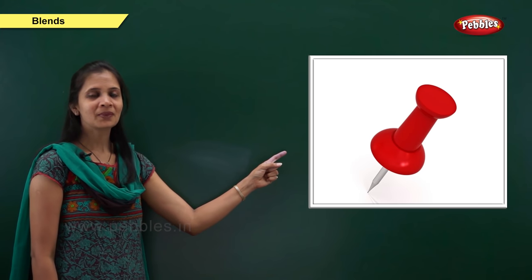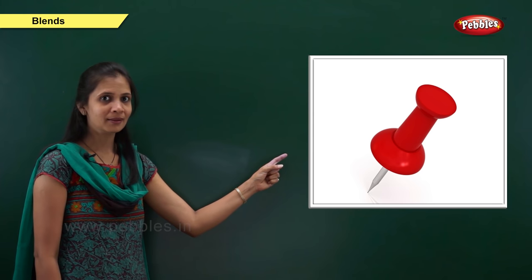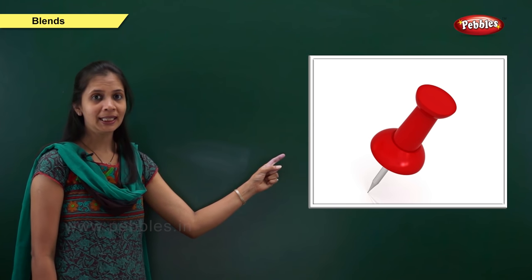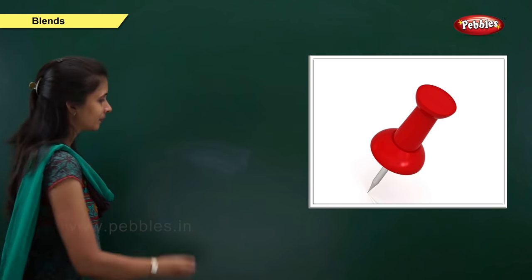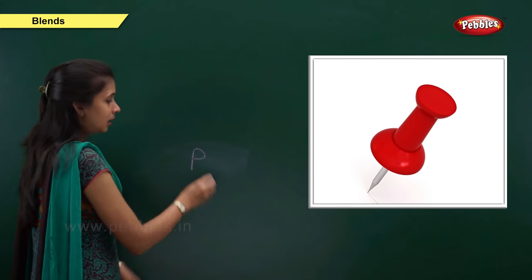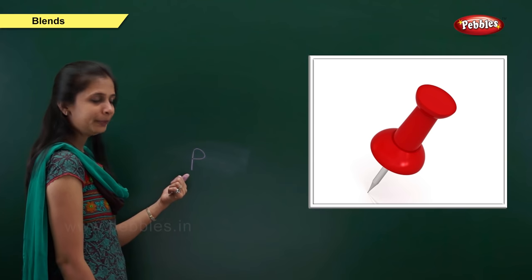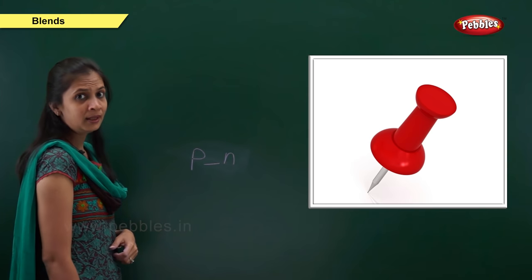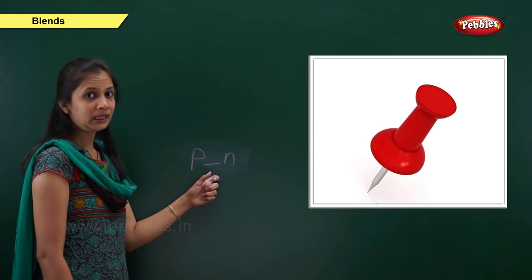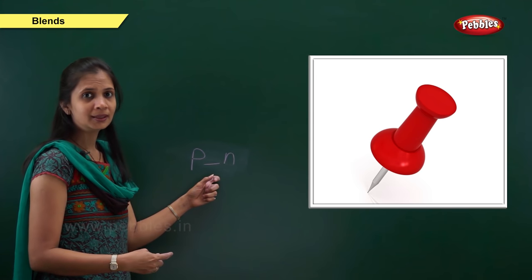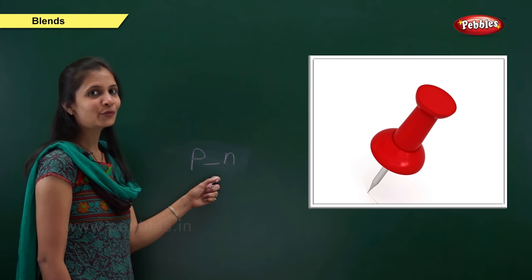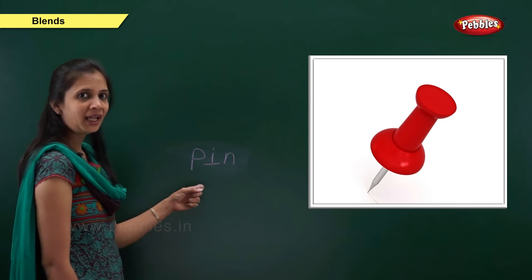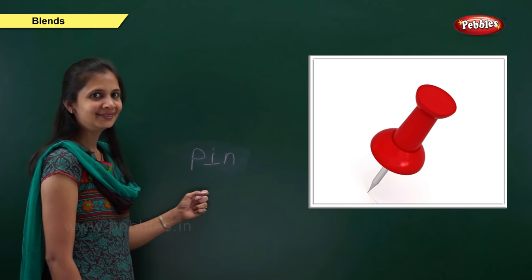Next one. Which picture is this? It is pin. What is the sound of this word? It is pa, e, na. The letter is p. When the sound is 'n', the letter is n. When the middle sound is 'e', which letter comes here? It is vowel i. So: pa, e, na — pin. P, i, n — pin.